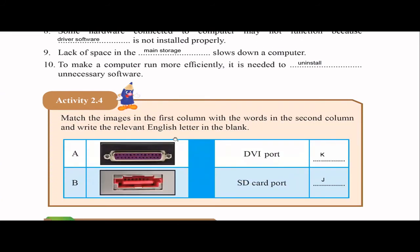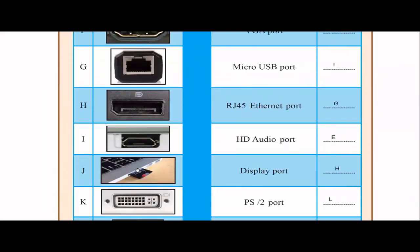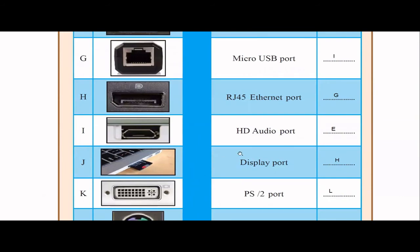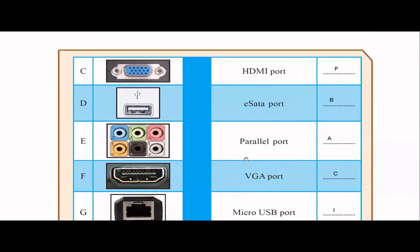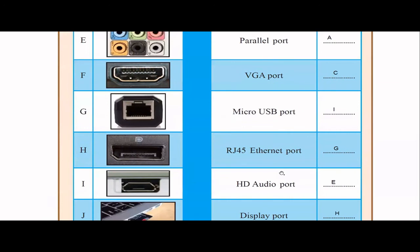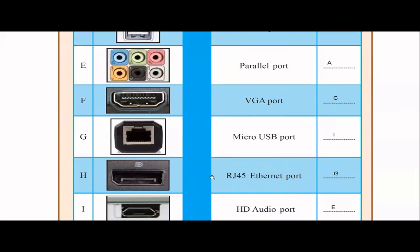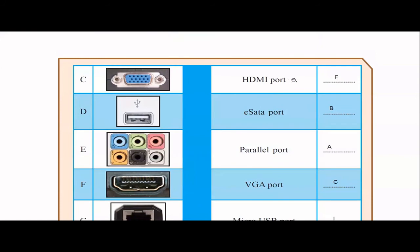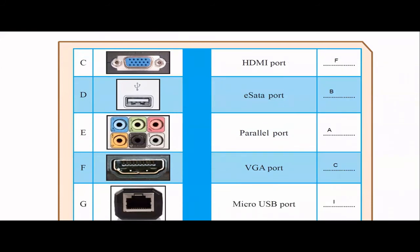Activity 2.4. Match the images in the first column with the words in the second column and write the relevant English letter in the blank. In this first column we can see few ports. You have to find the matching one, for example, DVI port. You have to find the correct picture for this. If you go for K, this is the DVI port. Next one, SD card port. These are directly from your textbook. This one, SD card port. Third one, HDMI port. This one, F. F is the HDMI port. E-SATA port. It was on top. This one, B. B will be the E-SATA port.